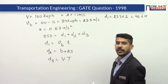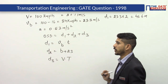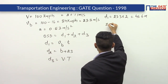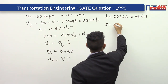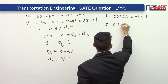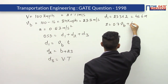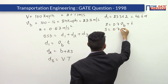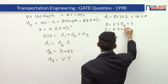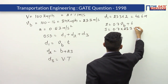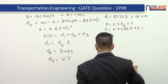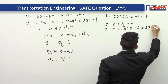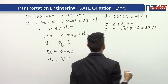Now we calculate d2, which is b plus 2s. First we calculate s using the empirical relation: s equals 0.7 times vb plus 6. So s equals 0.7 into 23.3 plus 6, which gives s equal to 22.3 meters.